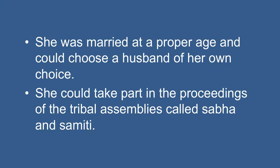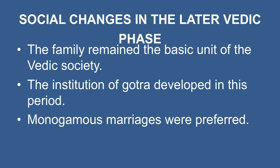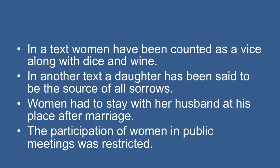The family remained the basic unit of the later Vedic society, but its composition underwent a change. The later Vedic family became large enough to be called a joint family with three or four generations living together. The institution of Gotra developed in this period, meaning that people having a common Gotra, descended from a common ancestor, could not marry within the same Gotra. Monogamous marriages were preferred even though polygamy was frequent. Some restrictions on women appeared during this period. In one text, women have been counted as a vice along with dice and wine, and in another, a daughter has been said to be the source of all sorrows. Women had to stay with their husbands after marriage, and participation of women in public meetings was restricted.